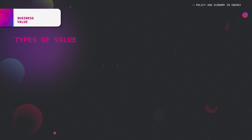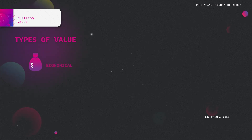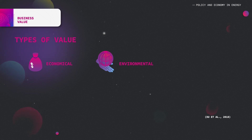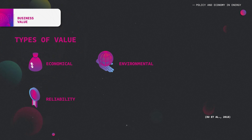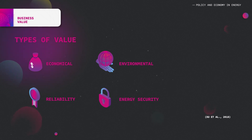The ecosystem business model promoted by the service approach leads to the creation of five types of value in the energy sector and for society in general: economical value by reducing unnecessary costs and investments; environmental value with the facilitation of integration of renewables; reliability value with the improvement of the network and data acquisition; energy security value with the reduction of blackouts; and consumer engagement and interaction in the energy reduction dynamic.